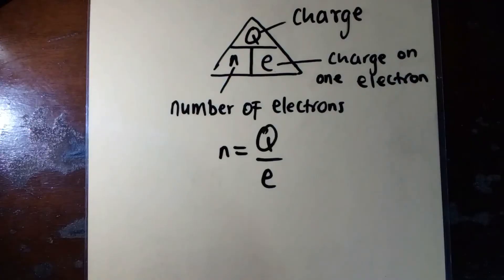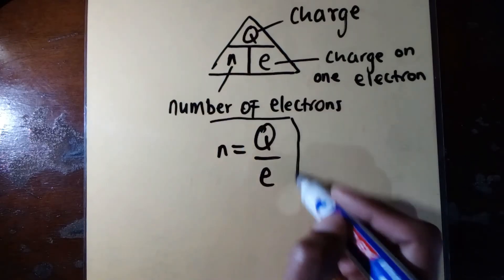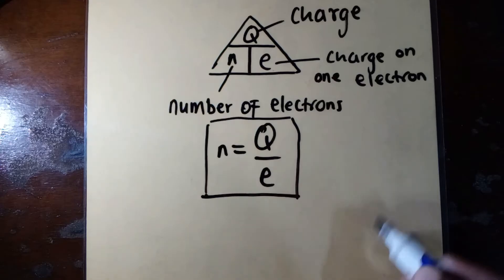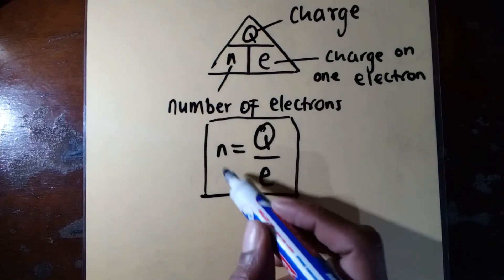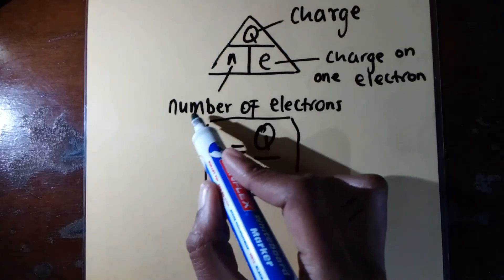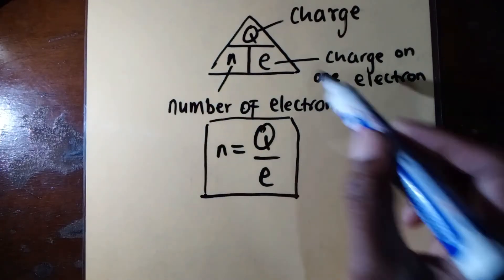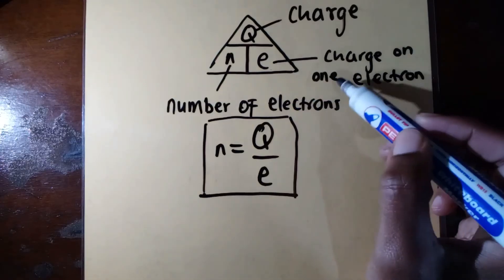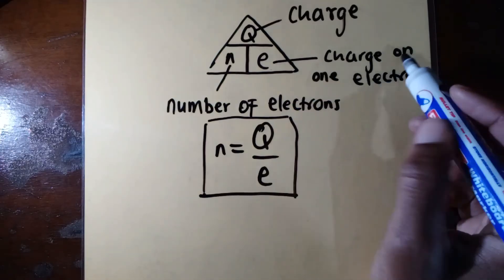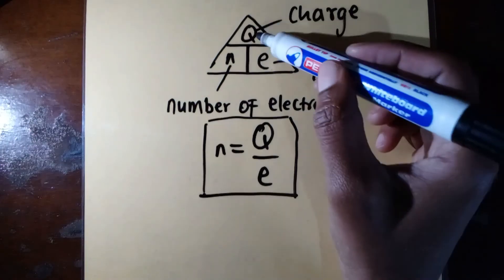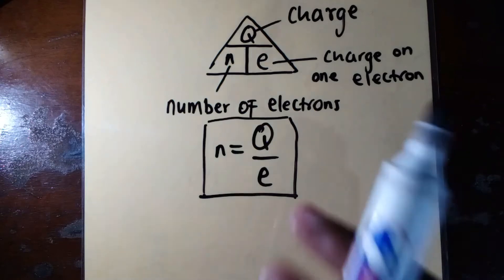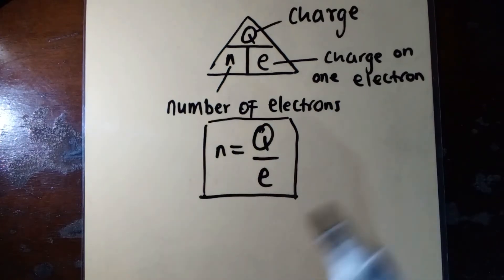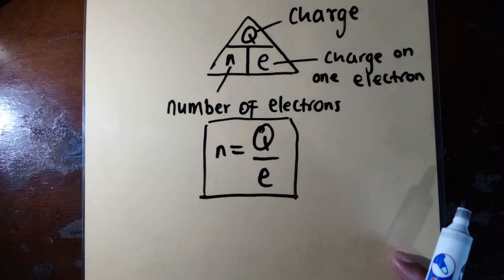At the back of your question paper you'll find the formula for charge quantization: Q = n × e, where n is the number of electrons on the object, e is the charge on one electron (the elementary charge), and Q is the amount of charge. Knowing this formula, let us now answer question 10.1.